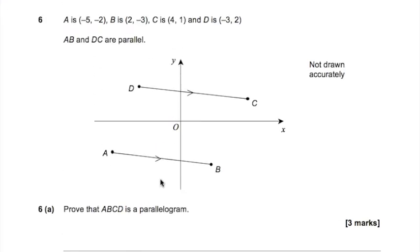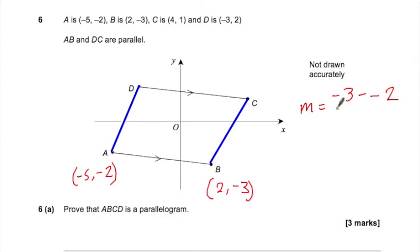Last question. A is minus 5 minus 2, B is 2 minus 3, C is 4, 1, D is minus 3, 2. Prove that ABCD is a parallelogram. Right, so if we're going to show this, firstly, we're going to show AB is perpendicular to CD, or DC. And similarly, these two blue lines, AD, are perpendicular to BC. All right, so first of all, let's work out the gradients of AB and CD. So A was minus 5 minus 2, B was 2 minus 3. All right, so I'm going to do Y2 minus Y1 over X2 minus X1. So minus 3 minus minus 2 over 2 minus minus 5. So that would give us minus 3 plus 2 is minus 1. 2 plus 5 is 7. So this line has a gradient of minus 1 over 7.